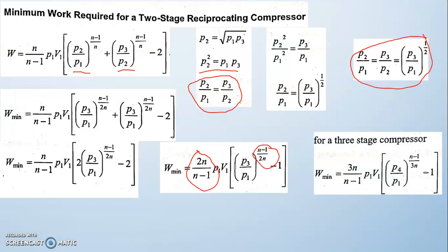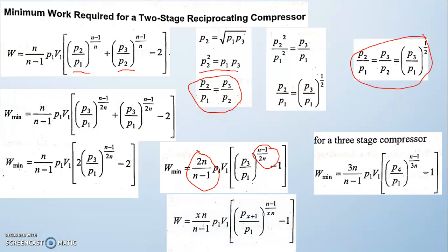For a three-stage compressor: 3n/(n−1) · p1·v1 · [(p4/p1)^((n−1)/(3n)) − 1]. The general equation for an x-stage compressor is: W_min = x · n/(n−1) · p1·v1 · [(p_(x+1)/p1)^((n−1)/(xn)) − 1]. Note that a two-stage compressor has three pressures, a three-stage has four pressures, and an x-stage compressor has x+1 pressures. This is the general equation for minimum work done for a multi-stage reciprocating compressor.